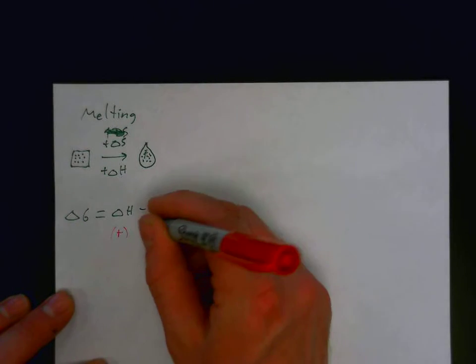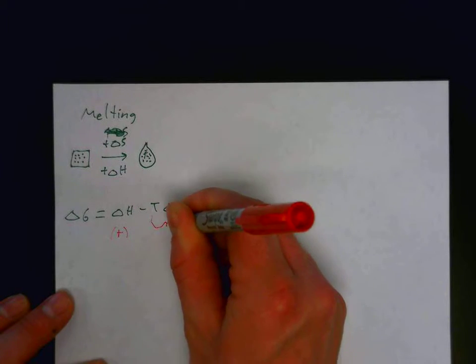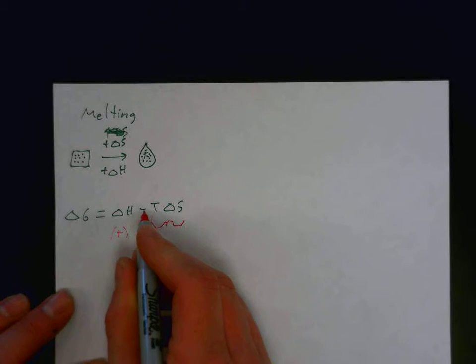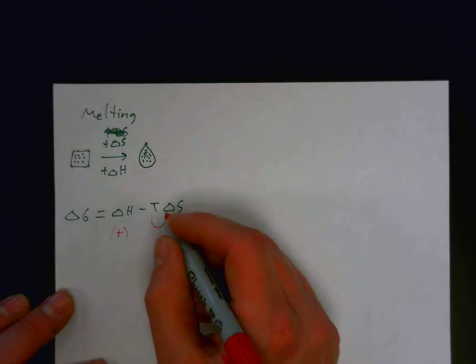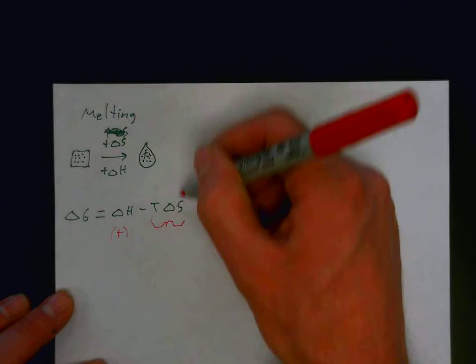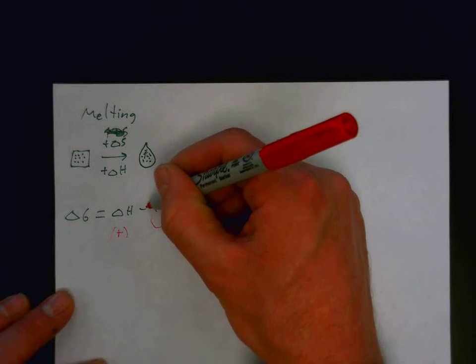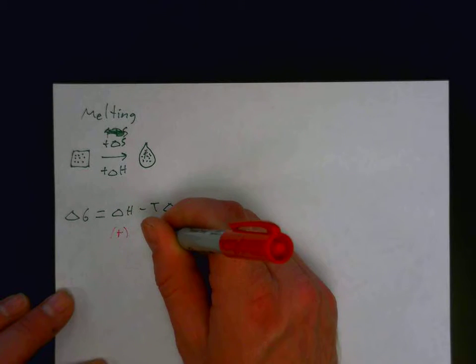However, as a term for this whole term, notice we have a negative sign. So, this whole term, if the entropy is positive, that gets multiplied by a negative, which means that the whole term would be negative.